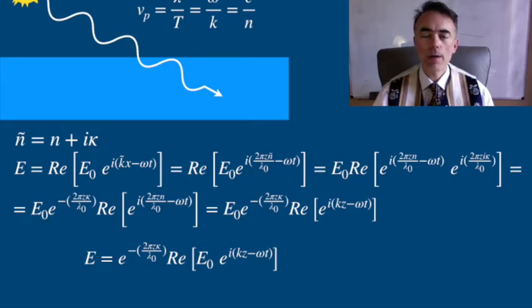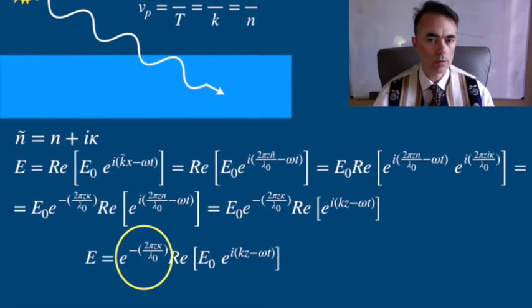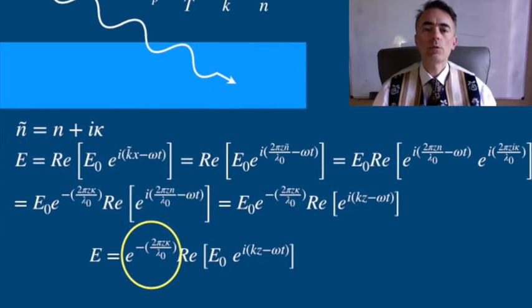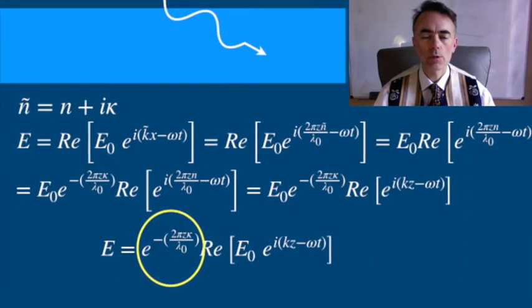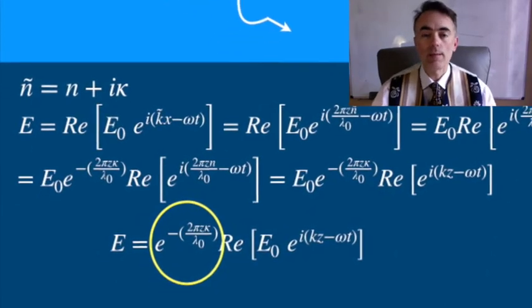And finally, we will see that the plane wave is multiplied by an exponential decay function, which comes to describe the attenuation due to the extinction coefficient, the absorption of light in the medium.